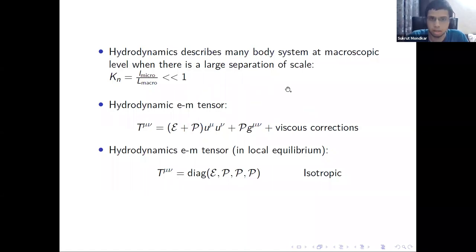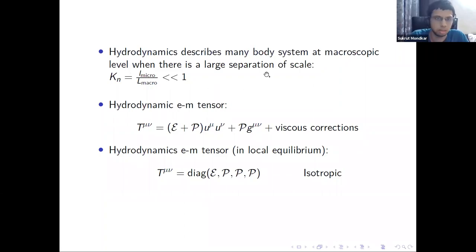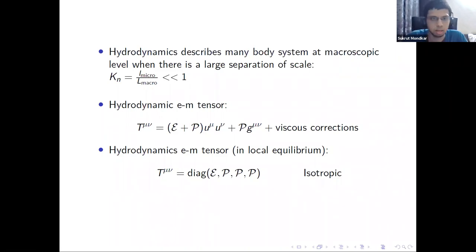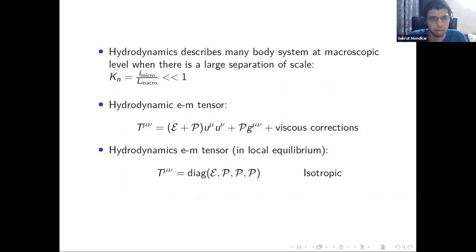Hydrodynamics describes any medium at the macroscopic level when there is a large separation of scales in the system. This separation of scale is quantified by the Knudsen number Kn, which is the ratio of microscopic length scale to macroscopic length scale. For example, if the microscopic description is given by kinetic theory, then the microscopic length scale would be the mean free path of the particles.